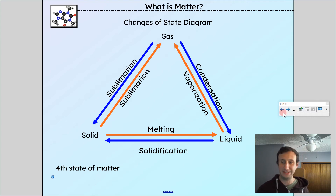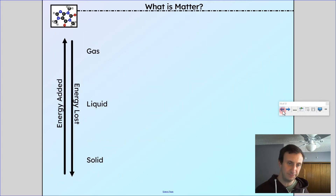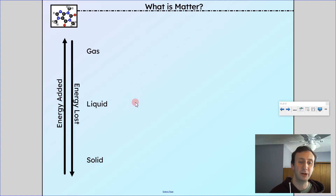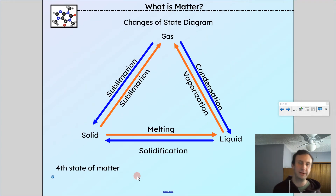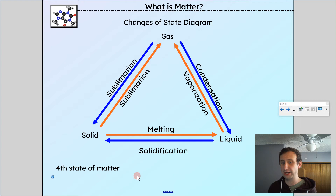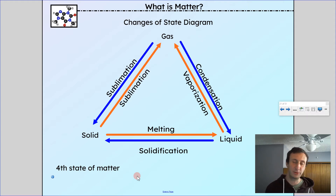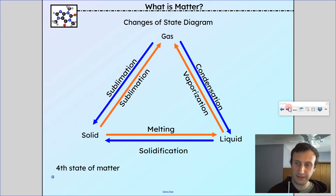The idea is: if I'm going up — solid to liquid to gas — that means it's an endothermic process, gaining energy. If I go down in state, I'm losing energy — that's an exothermic process. This triangle of different states is important to know, along with the names of the different phase changes. In the diagram, red represents endothermic (heat going in) and blue represents exothermic (heat leaving, going down in energy).